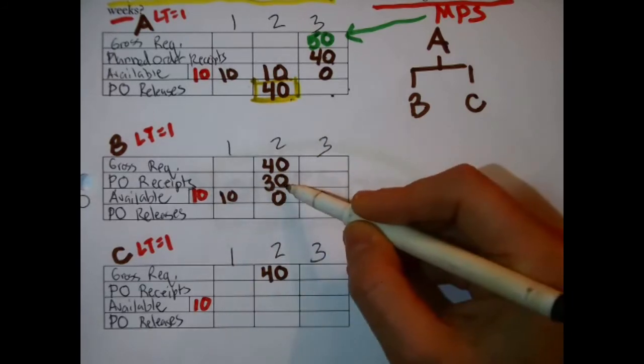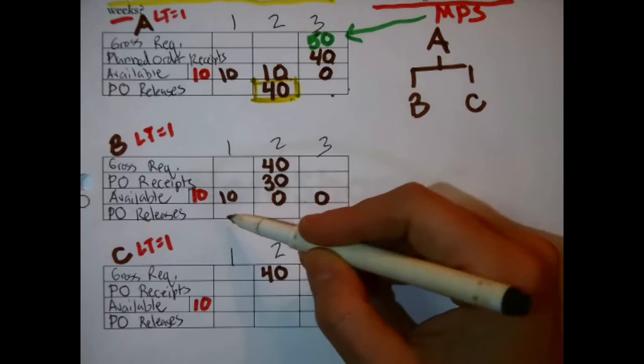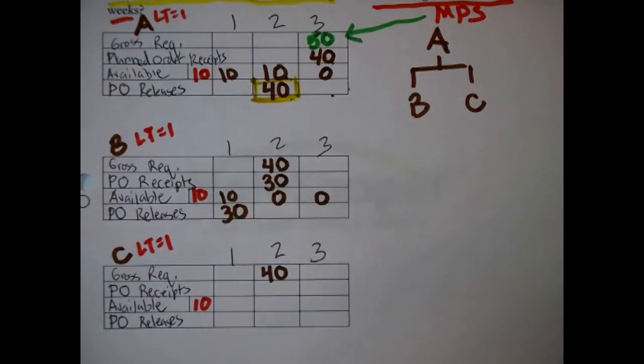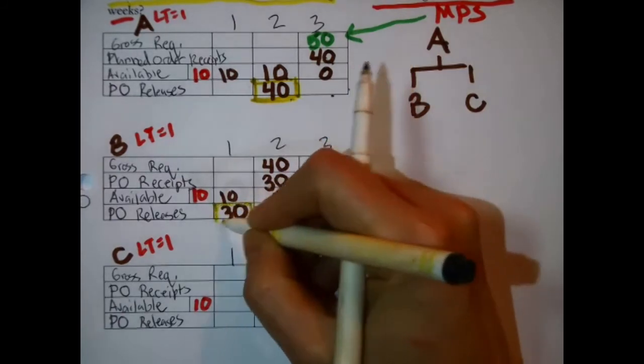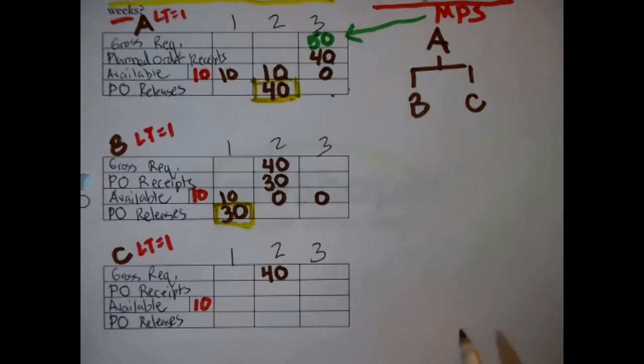Now, if we need to receive thirty in the second week, then check the lead time one week, drop down to the bottom line and move forward one. Note to self, that means that since it's going to take a week for them to be created or delivered, we need to order thirty the week before, in the first week.